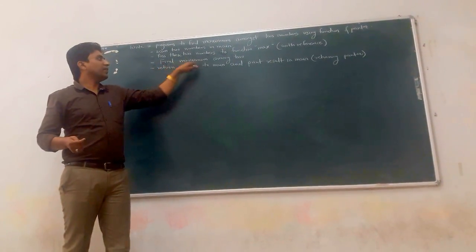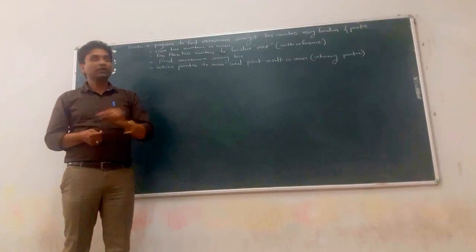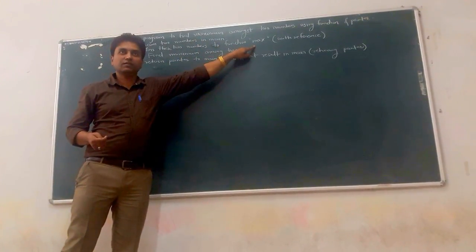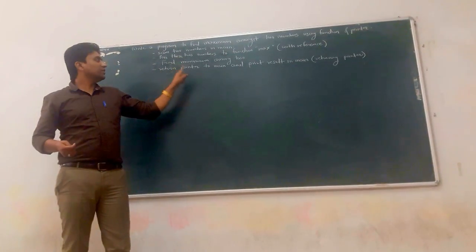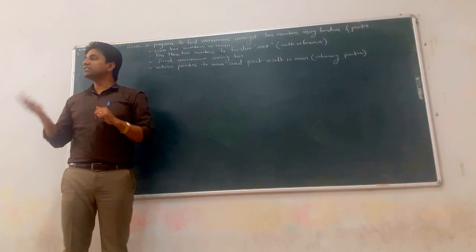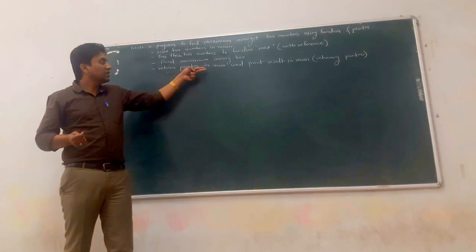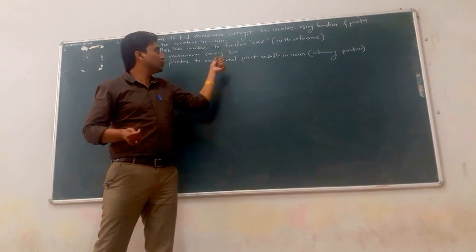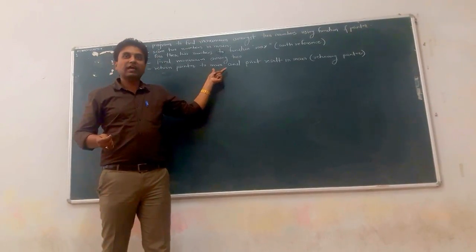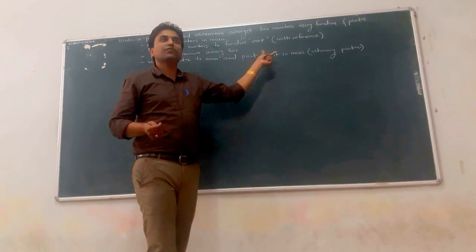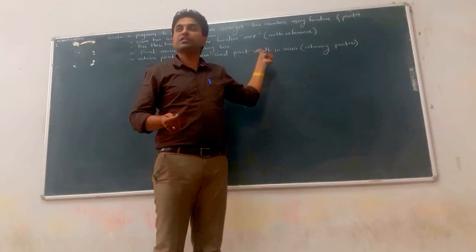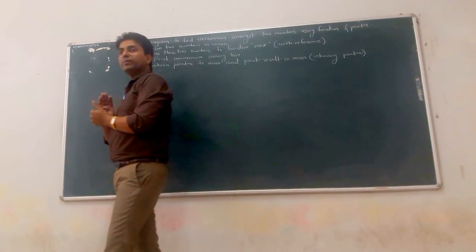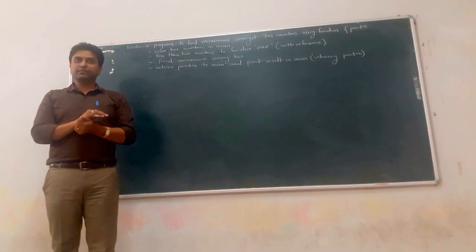Find which one is the maximum in the max function, then return a pointer to the main function. The max function returns the address of that number to the main function, and inside the main function we can show the result. We have to design one max function with arguments and a return type.